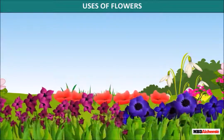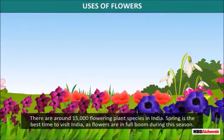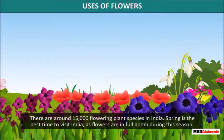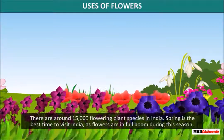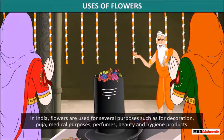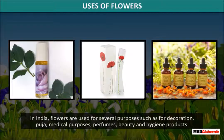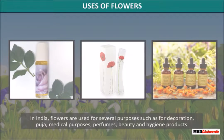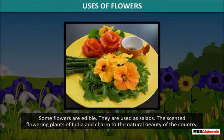There are around 15,000 flowering plant species in India. Spring is the best time to visit India, as flowers are in full bloom during this season. In India, flowers are used for several purposes such as decoration, puja, medical purposes, perfumes, beauty, and hygiene products. Some flowers are edible and are used as salads.